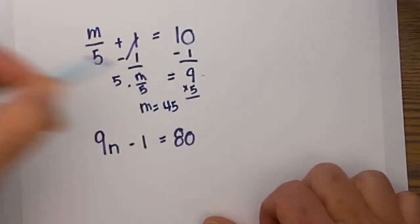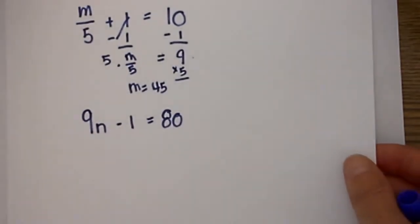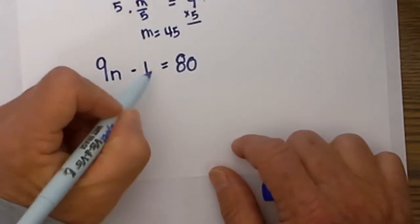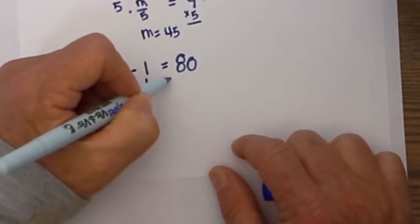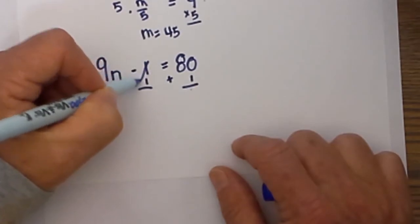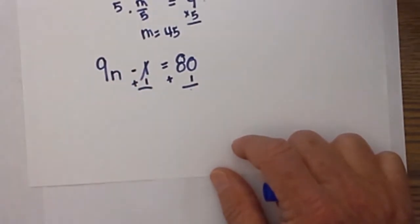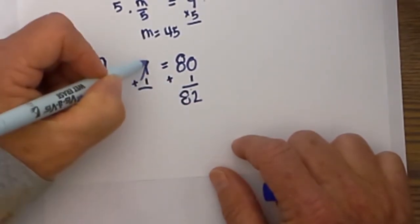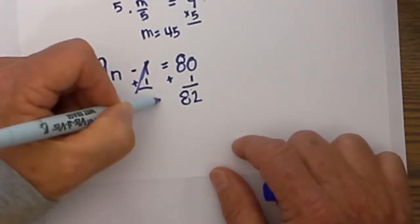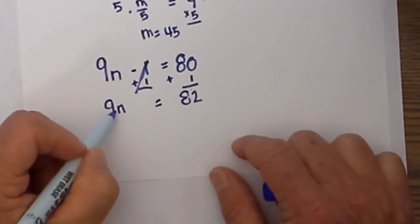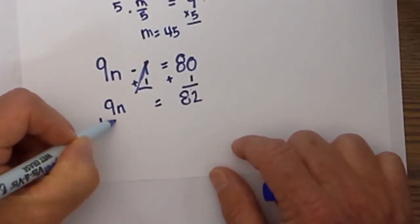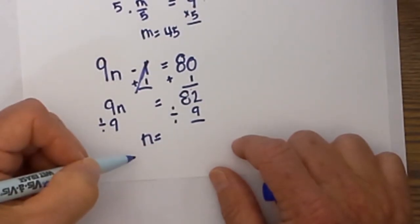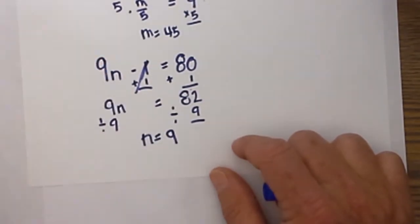Okay, so the third two-step equation. Again, step one, we want to get n by itself. We will undo the subtraction with addition, and what we do to one side we must do to both. These cancel, this becomes an 82, and these cancel. This 9n comes down, so we have 9n is equal to 82. In order to get rid of the multiplication we will divide by 9. What we do to one side we must do to the other, so n becomes 82 divided by 9 is 9.